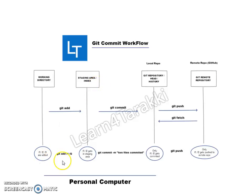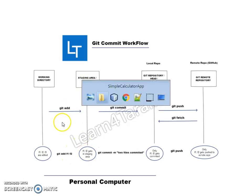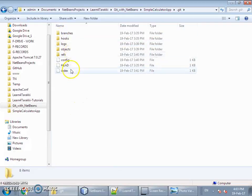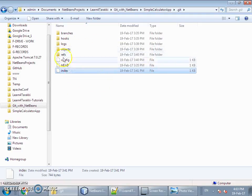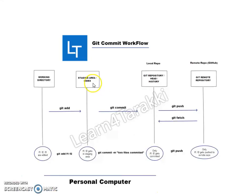In this diagram we have shown files F1, F2, and F3. Suppose we have edited F1, F2, and F3 in the working directory over one or two days, and we issue the command git add F1 F2. This command takes only F1 and F2 into the staging area. The staging area is also known as the index, and F1 and F2 are now in the staging area.